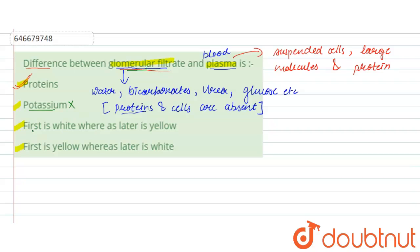The next two options — first is white whereas later is yellow, and first is yellow whereas later is white — are both incorrect. Glomerular filtrate and blood plasma cannot be differentiated on the basis of their color, so the last two options are also incorrect.